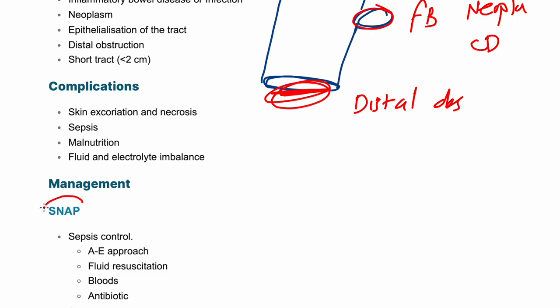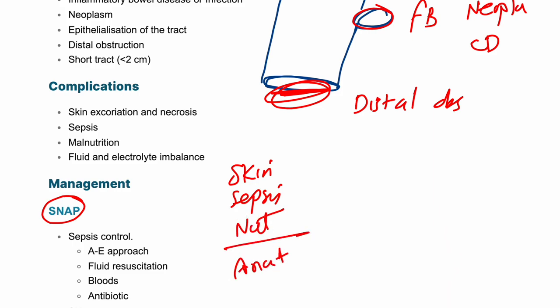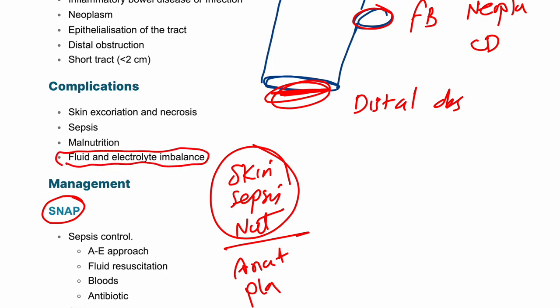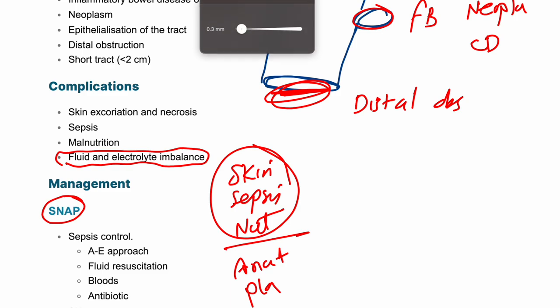In management, there is a mnemonic called SNAP: S is for skin and sepsis, N is for nutrition, A is for anatomy, and P is for plan. The S and N remind us of possible complications: excoriation, necrosis, sepsis, and malnutrition.